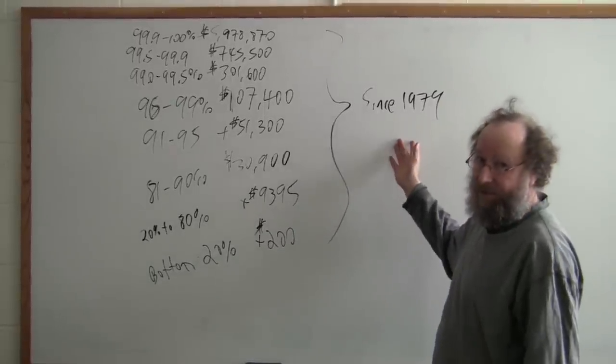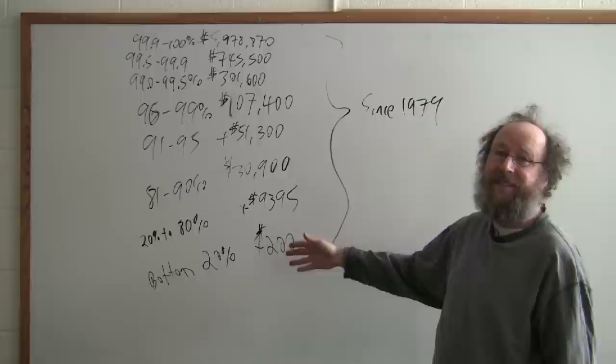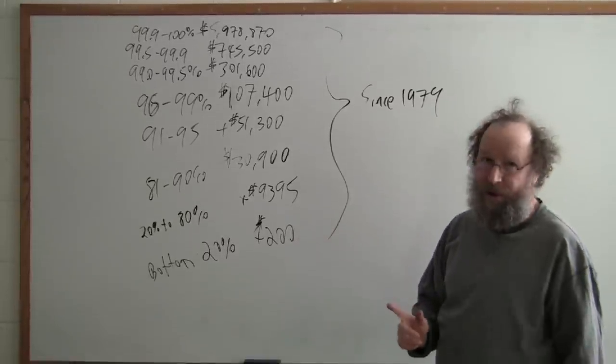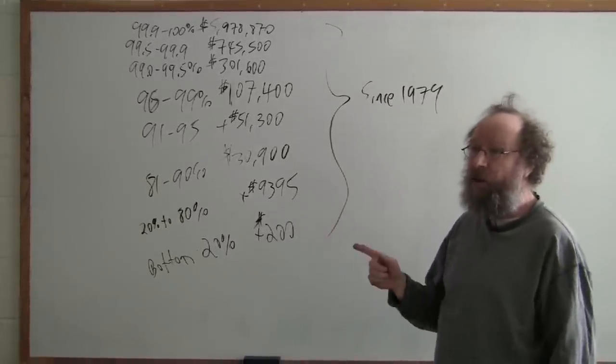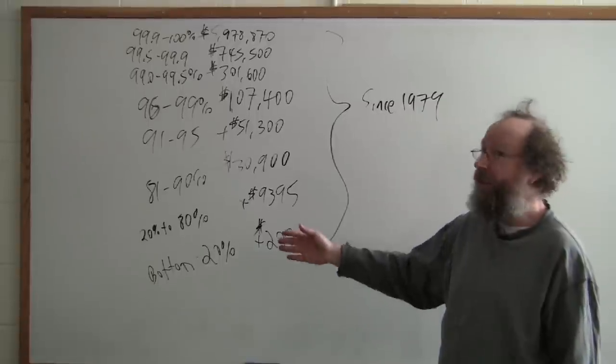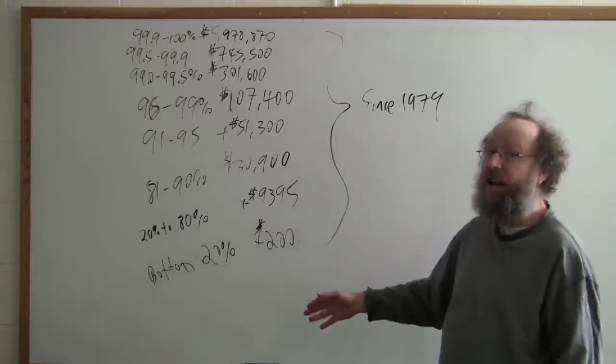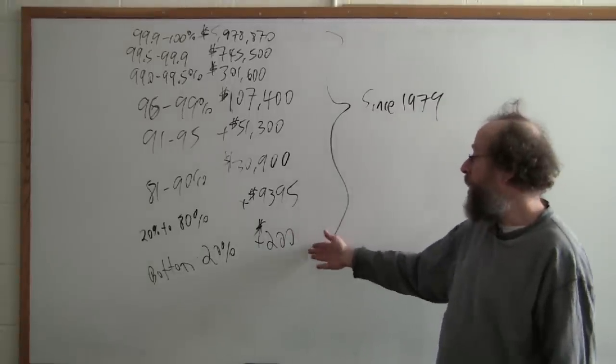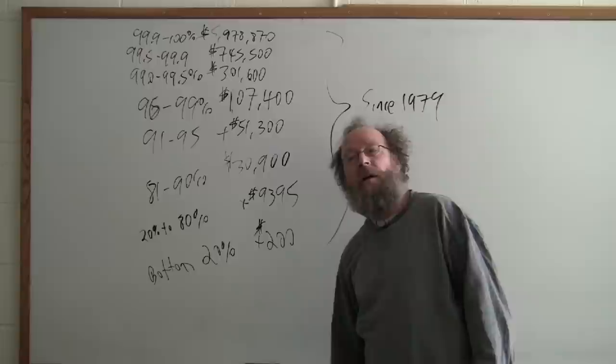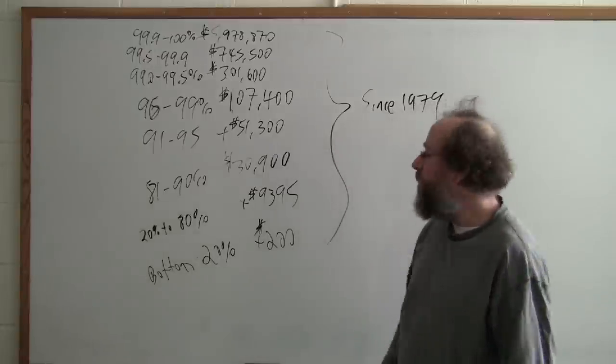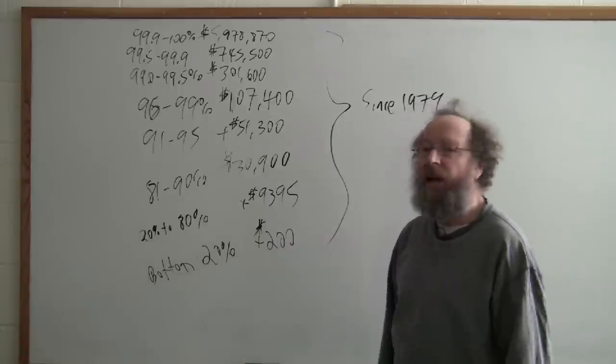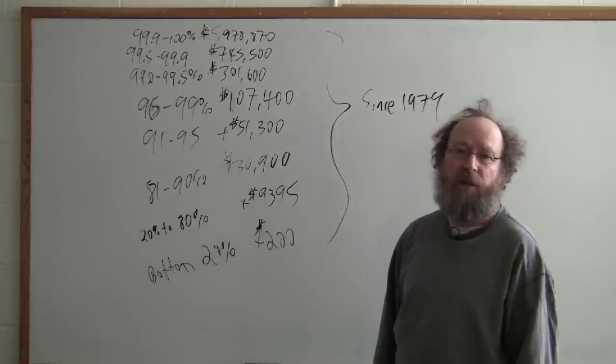Since 1979, this is pre-tax income and keep in mind that we have cut taxes for the rich more than for the poor, so the post-tax income data are even more skewed. The bottom 20% of the population, 60 million Americans, the average household in that group gained $200.